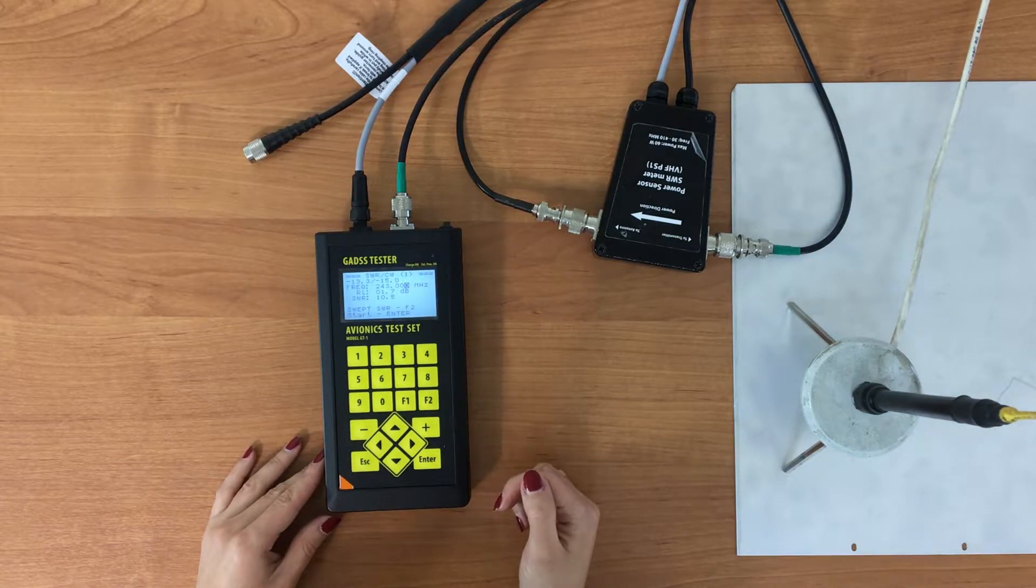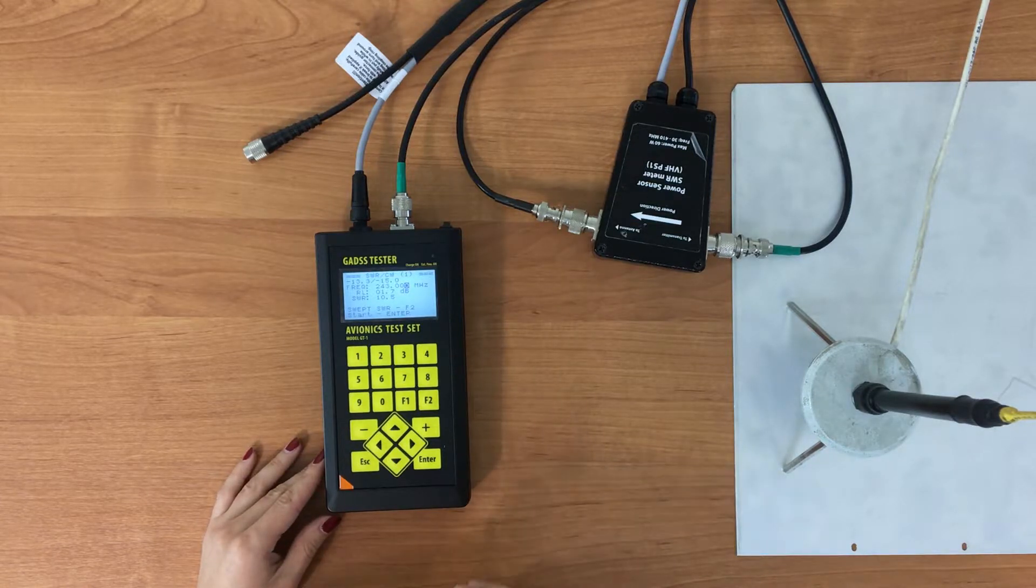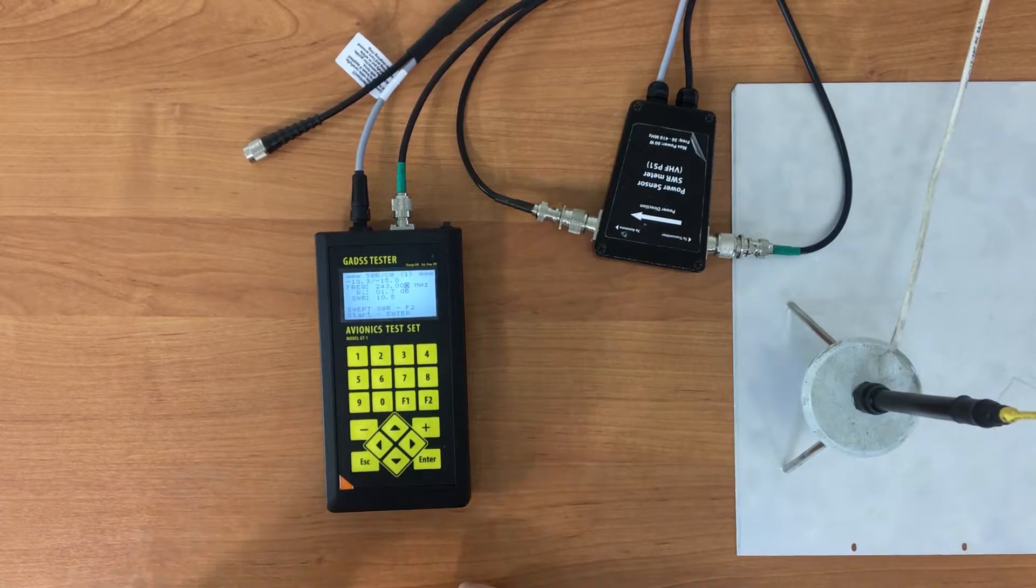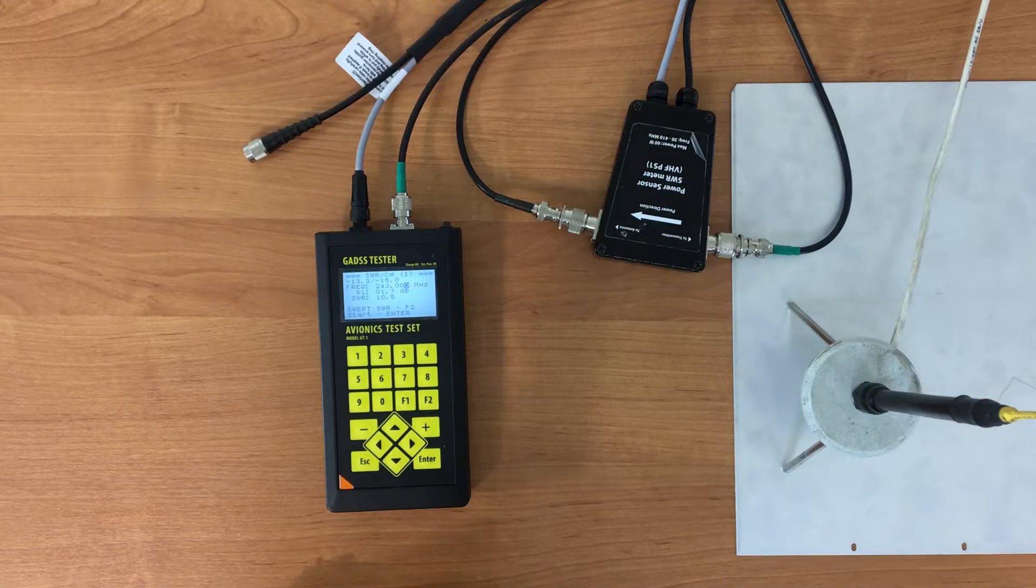As per FAA requirements, the SWR of antenna must be less than 2. Thus, we make a conclusion that this antenna is well adjusted for 406 and 121.5 channels, but not adjusted for avionic frequency to 243 MHz. It should be adjusted and properly tuned.